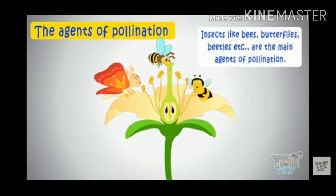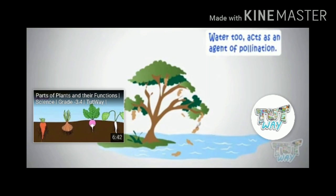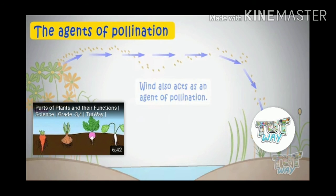After the types of pollination, now the agents of pollination. Agents means the ways or carriers by which pollination occurs. There are so many agents of pollination like bees, butterflies, and insects. Water is also an agent of pollination — the pollen grains shed in water and they reach to the same flower of the same species. Like water, wind also acts as an agent of pollination. Light, hairy pollen grains are carried by wind and reach towards the same species.